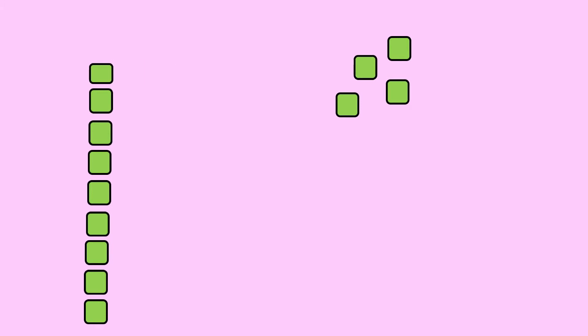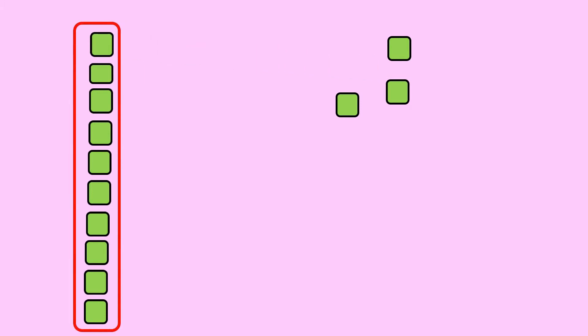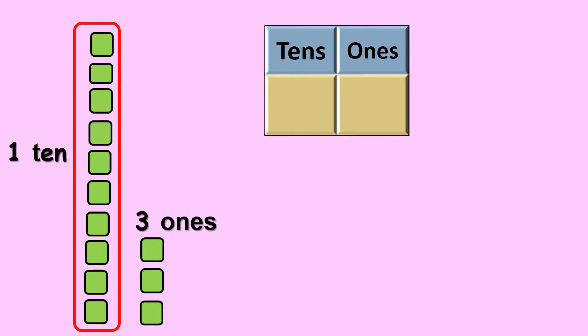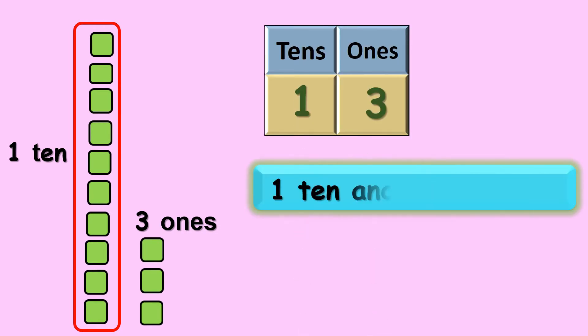Here comes our next number. Are you all ready? 1 2 3 4 5 6 7 8 9 10. So children, 10 ones will give us 1 ten, and the remaining are 3 ones. So 1 ten and 3 ones gives you 13.